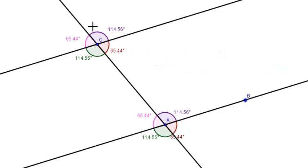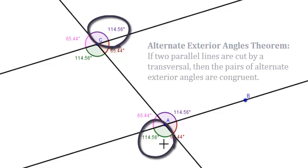How about alternate exterior angles? Well, again, through things like the linear pair postulate and the vertical angles congruence theorem, we can prove that they're also congruent.